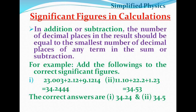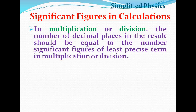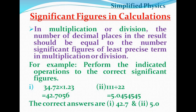In multiplication or division, the number of significant figures in the result should equal the number of significant figures of the least precise term. For example, if one factor has three significant figures and another has two, the final answer must have two significant figures — matching the least precise term.